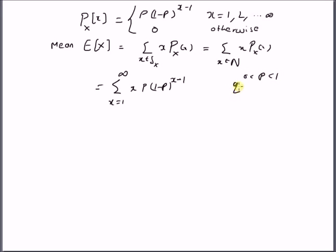Let us define another variable, the probability value q, which equals 1 minus p. So q is also less than 1. Now we can rewrite the expected value as p times the sum from x equals 1 to infinity of x times q^(x-1).